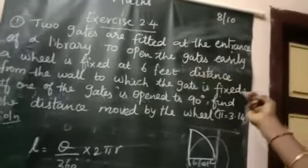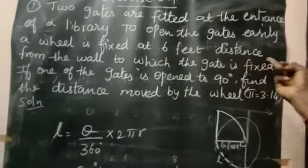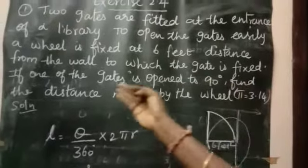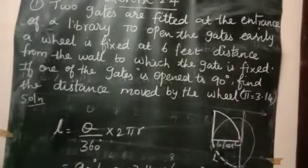To open the gates easily, a wheel is fixed at 6 feet distance from the wall to which the gate is fixed. If one of the gates is opened 90 degrees, find the distance moved by the wheel.